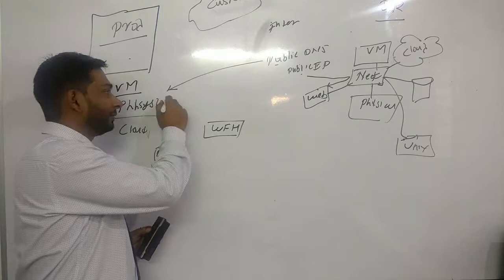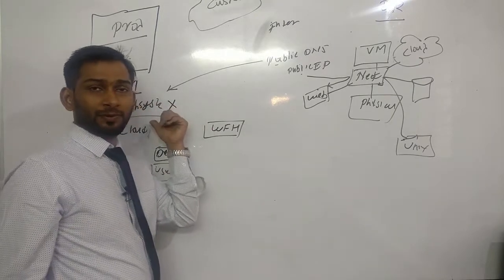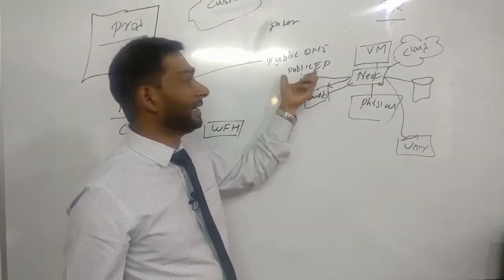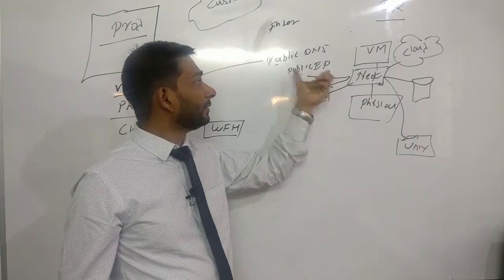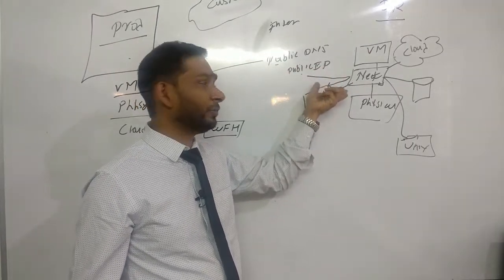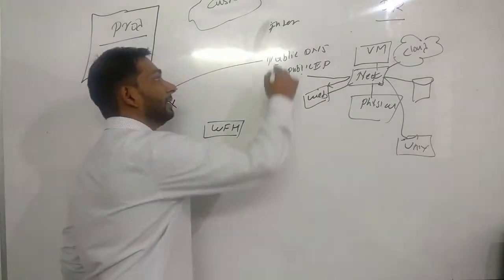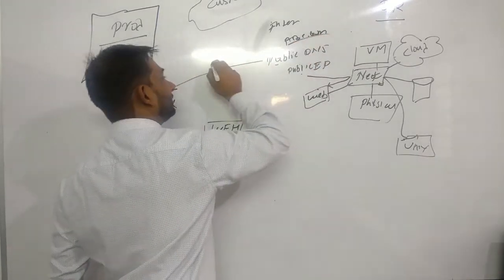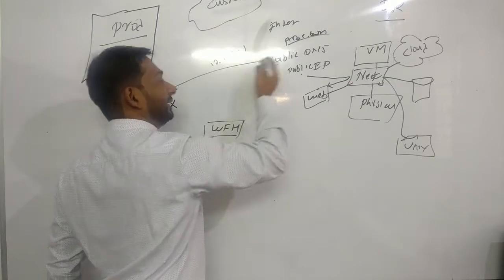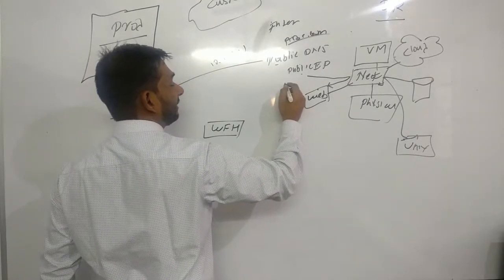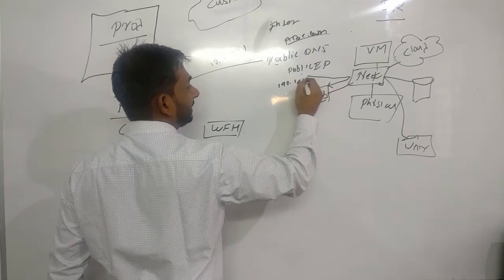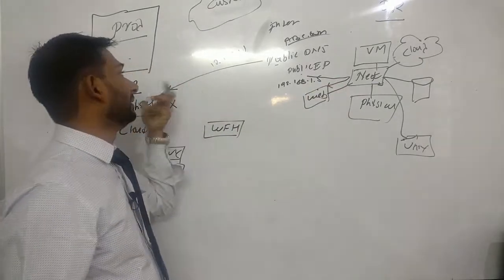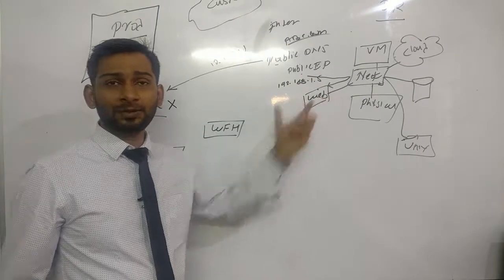Earlier this request was getting sent to the IP address which was at production, but if this site is down there will be no response. Our new site is up. What we need to make sure is we update our public DNS to the new public IP address. So whatever request was coming to abc.com will get diverted from this IP address, let's assume this was 10.1.1.1, it will get redirected to 192.168.1.5 because this is my new public IP address.